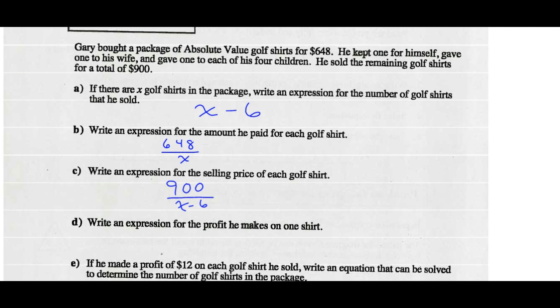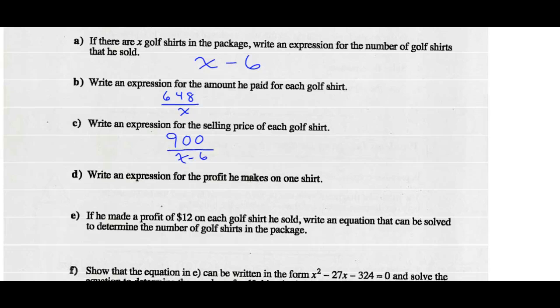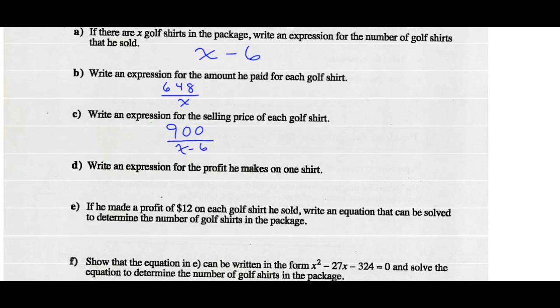Part D: write an expression for the profit he makes from one shirt. This is how much he sold one shirt for: 900 divided by (X minus six). And this is what he paid for each shirt: 648 divided by X. So if I subtract those, I should have the profit he makes from one shirt.